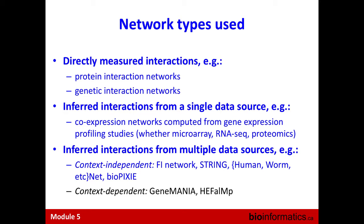What I described is a context-independent gene recommender system. The simplest way to combine the networks is uniform weighting, where each data source contributes equally to the final edge — just the sum of all edges observed for a pair of genes. This is probably one of the most widely used approaches.